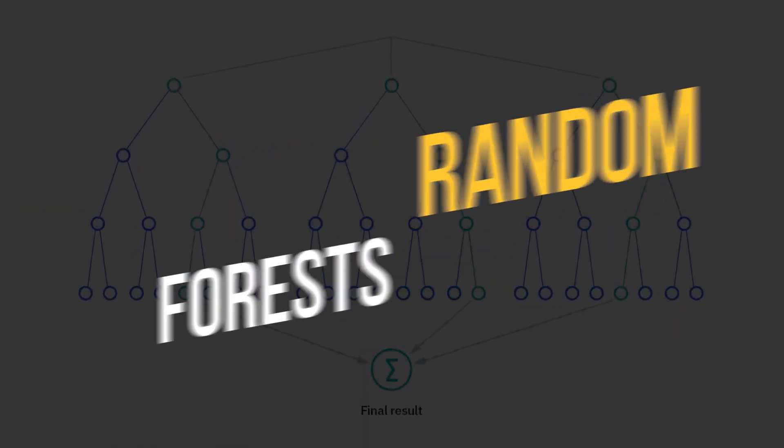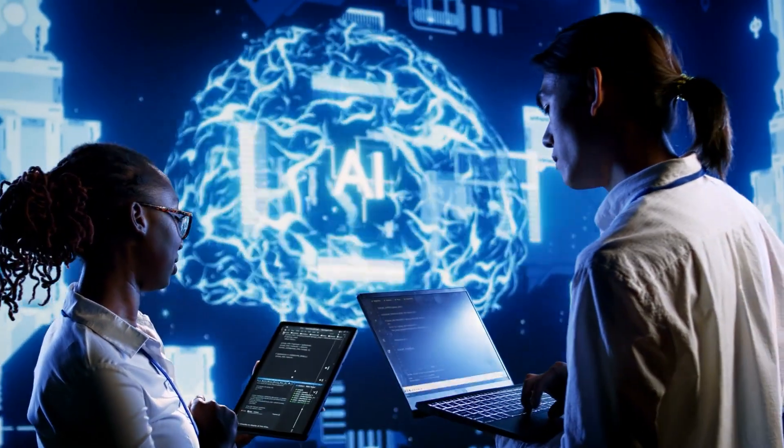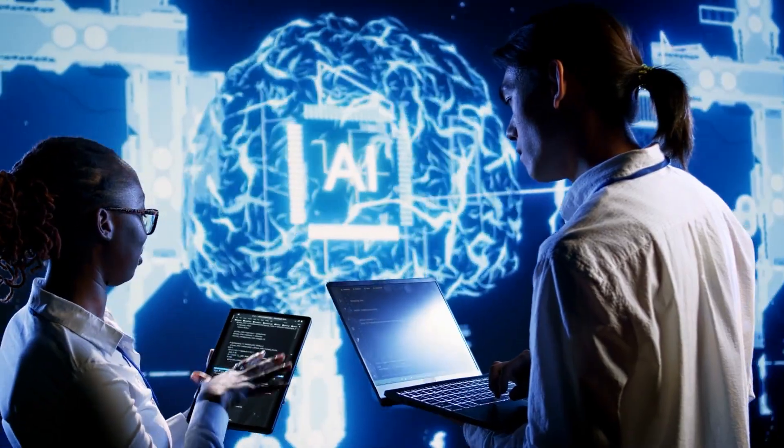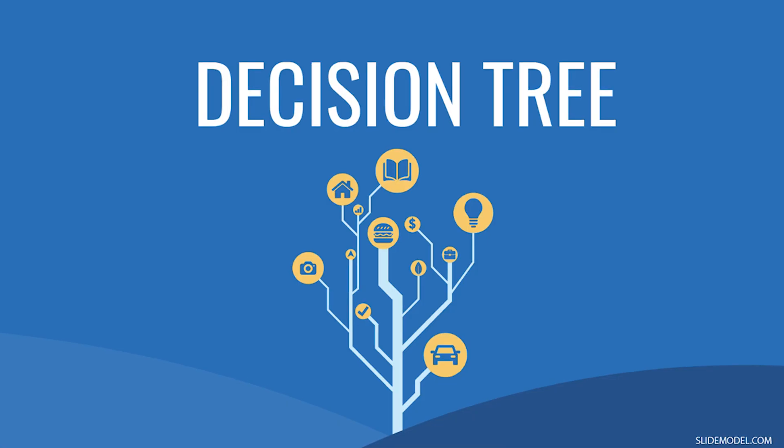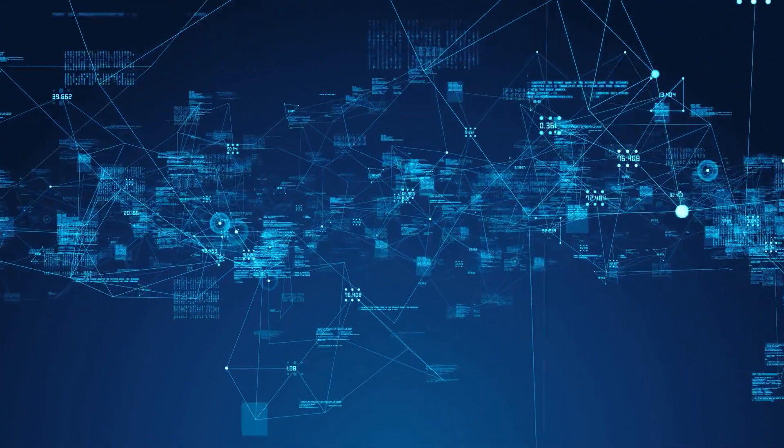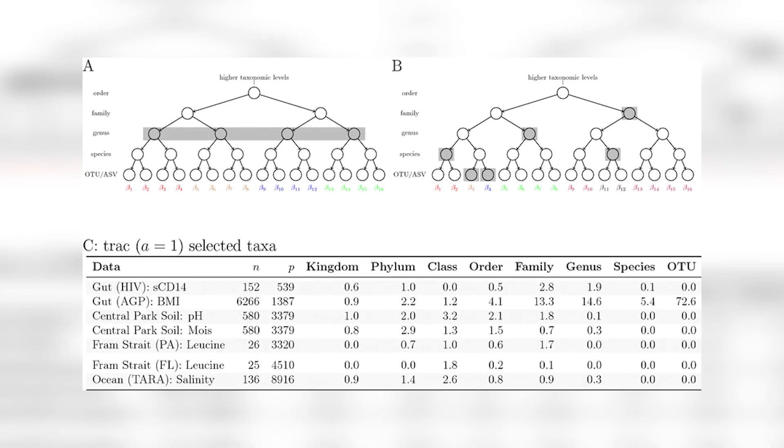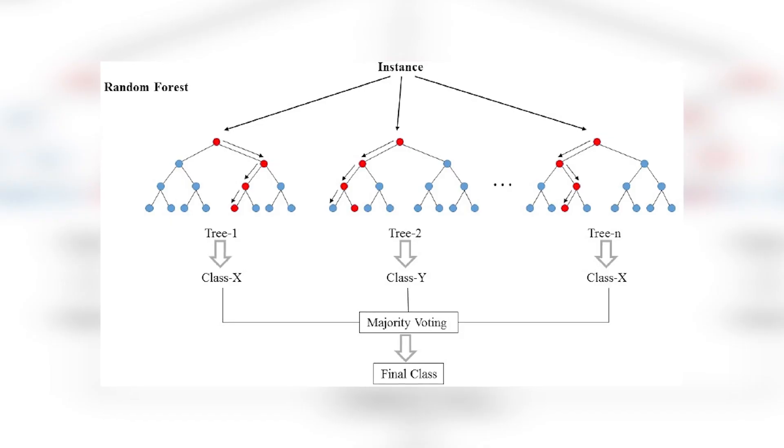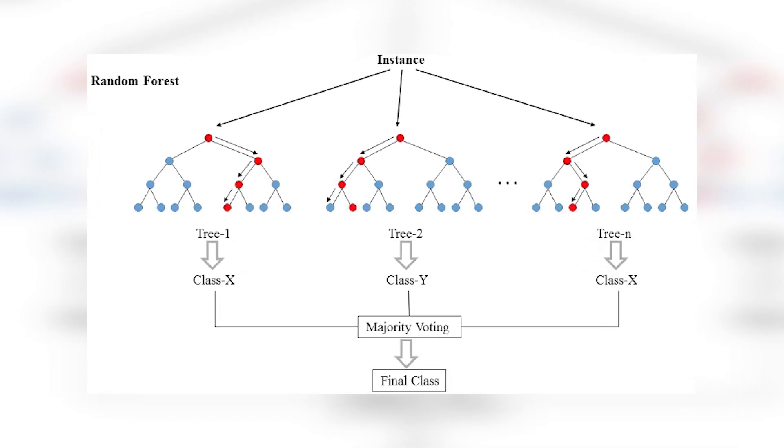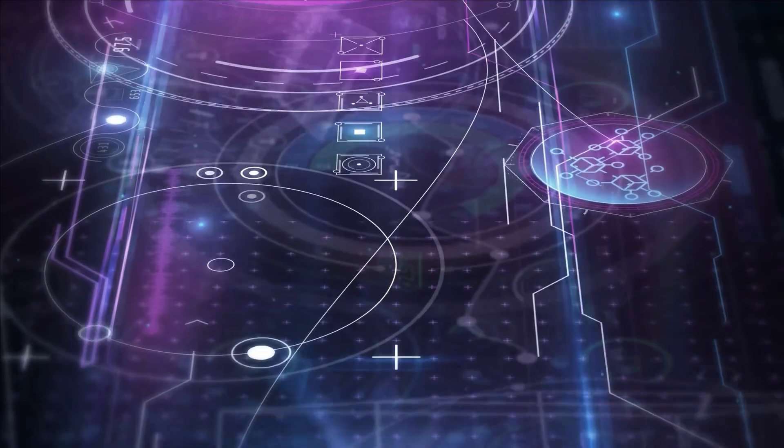Random forests are powerful ensemble learning algorithms that produce predictions by combining many decision trees. Each decision tree in a forest is trained on a different subset of the data, and the final prediction is formed by aggregating all of the tree's predictions. Random forests are well-known for their robustness and capacity to handle large amounts of data.